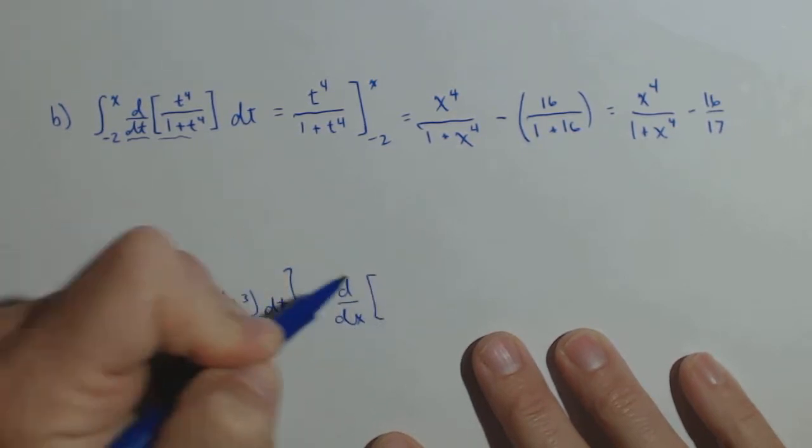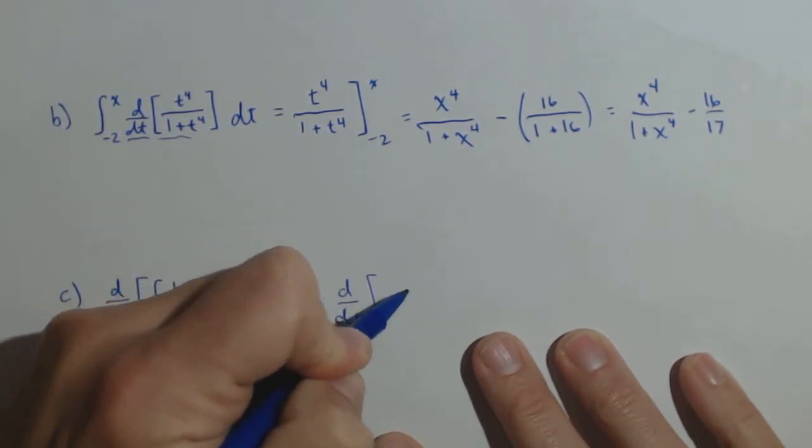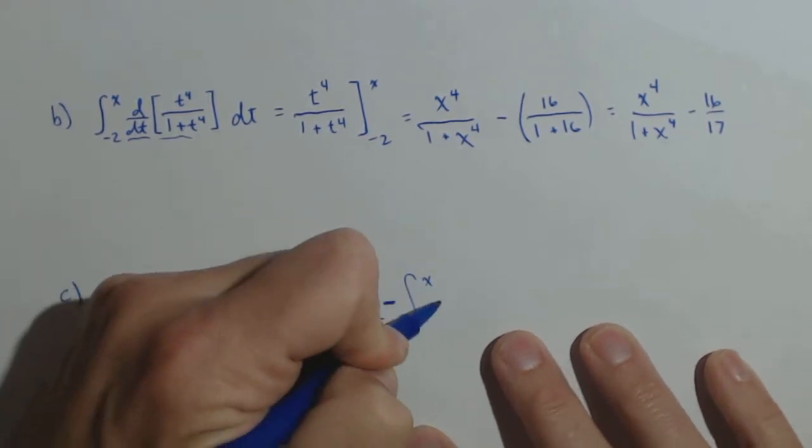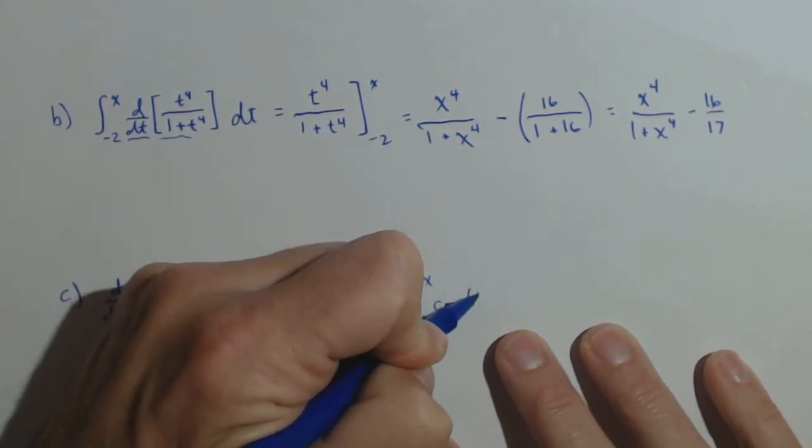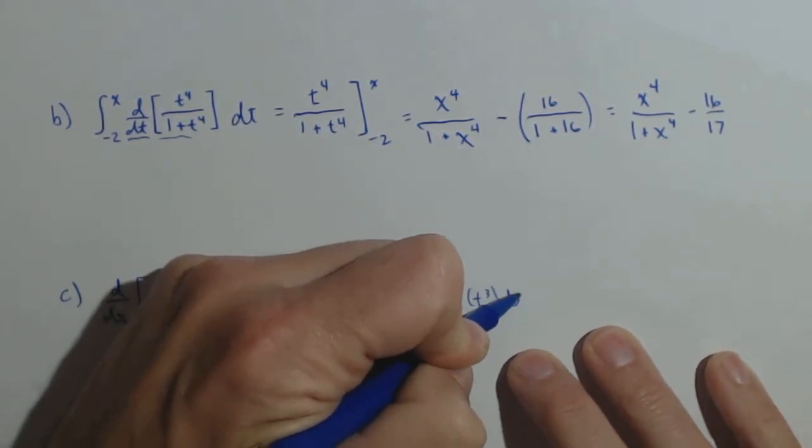all we have to do is make our integral negative. So, negative one to x, of cosine of t cubed dt,